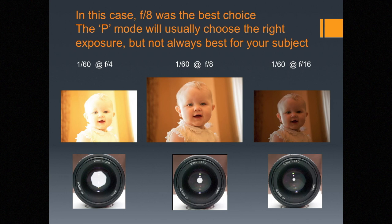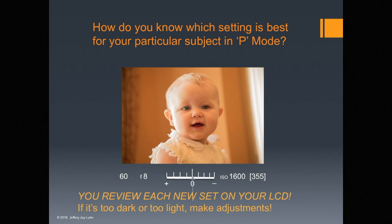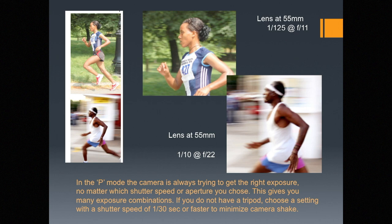In most situations P mode will be good. You can rotate the shutter dial — the thumb wheel — and get different exposure combinations. The good one is a 60th at f8; if we slow the shutter speed down to a 30th, the camera automatically goes to f11 to compensate, and the photograph looks pretty much the same. In P mode, the camera is always trying to get the right exposure no matter what shutter speed or aperture you choose. If you don't have a tripod, choose a setting with a shutter speed of a 30th of a second or faster to minimize camera shake.